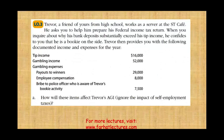Let's take a look at this. Trevor, a friend of yours from high school, works as a server at the SD Cafe. He asks you to help him prepare his federal income tax return. When you inquire about why his bank deposits substantially exceed his stated income, he confides to you that he is a bookie on the side. That's interesting. Trevor then provides you with the following documented income and expenses for the year.